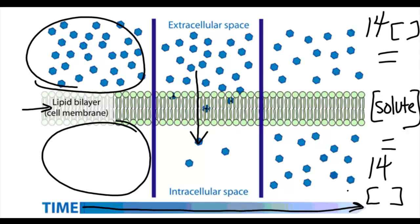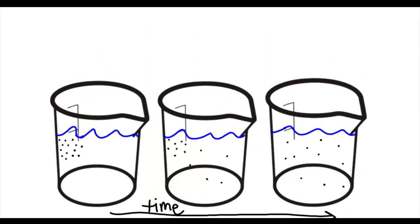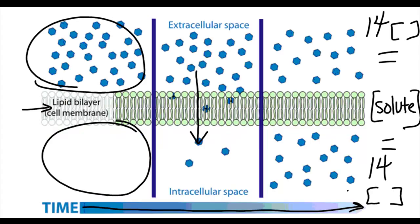So that's diffusion — whether it happens in beakers without a membrane or in your cells where diffusion may happen across the lipid bilayer. Diffusion is movement of a solute from an area of high solute concentration to an area of low solute concentration.